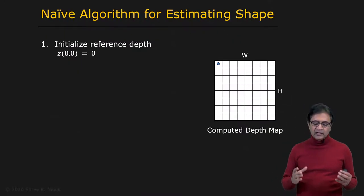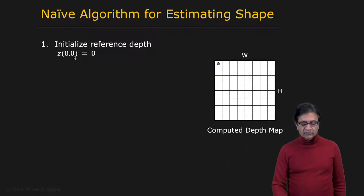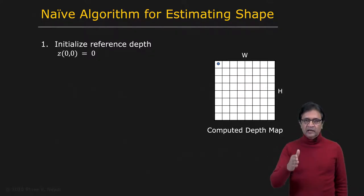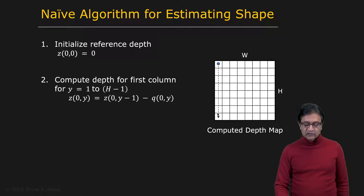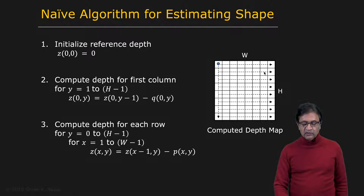This leads to a naive integration algorithm. You take the top-left corner, assign its depth value as 0, and integrate depth along a column going downward using the q values. Now you have depth at all pixels in that column. You then use those as seed values to integrate in the horizontal direction using p values. This gives you a complete depth map.